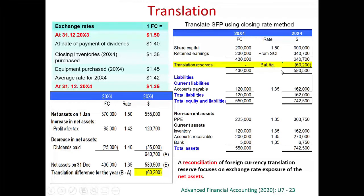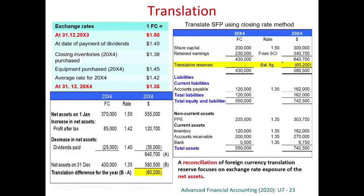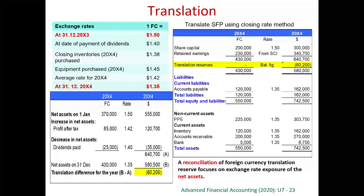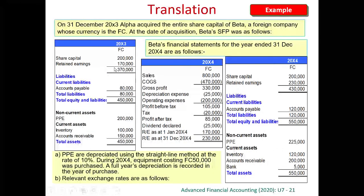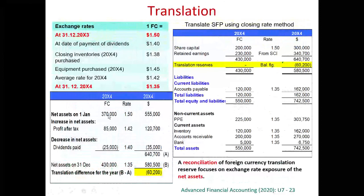If the question asks why it is $60,200 or asks for a reconciliation, you can do a reconciliation. This is the reconciliation: we reconcile to explain why we have a translation reserve under the closing rate method. It is because for all assets and liabilities, every year we use a new exchange rate — the closing rate. The opening net assets, as seen from the financial statements, is 370,000 FC, translated at the acquisition-date rate of 1.5.